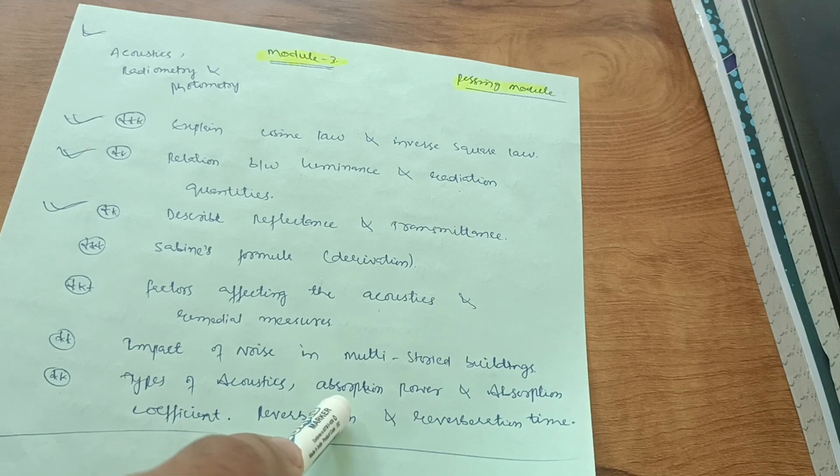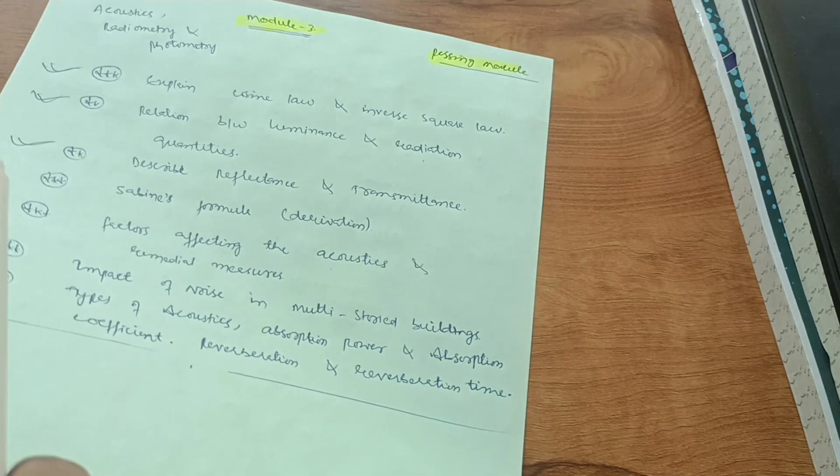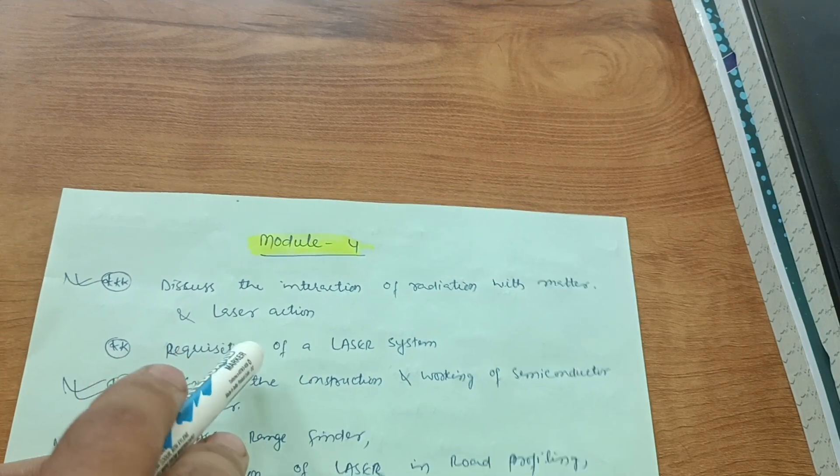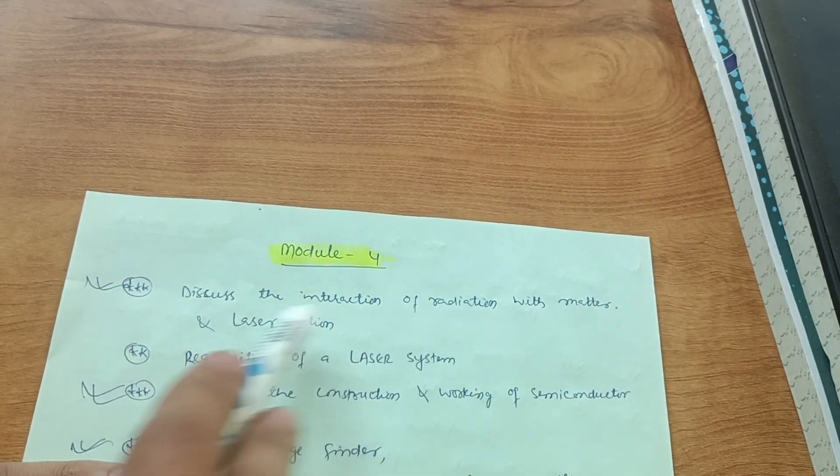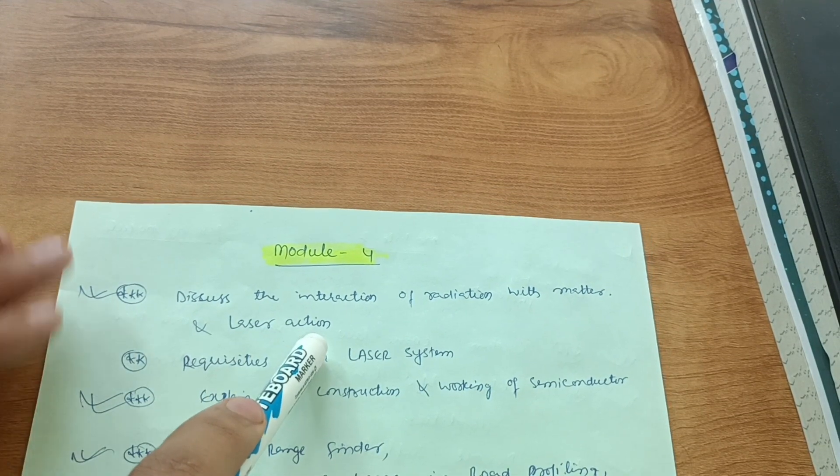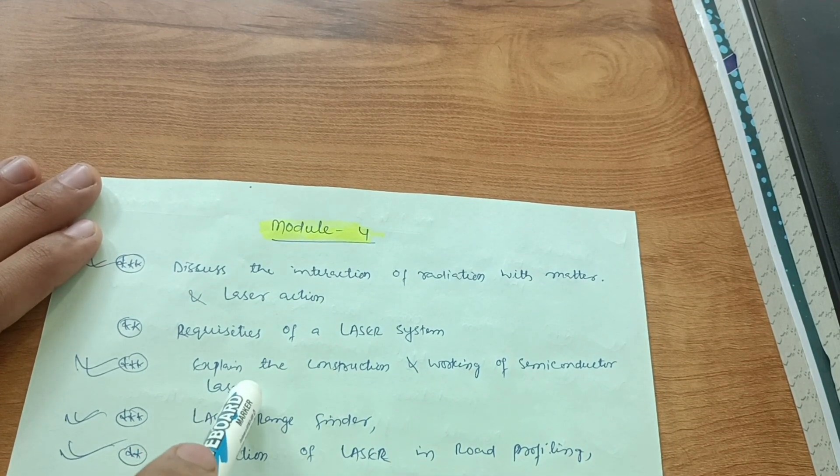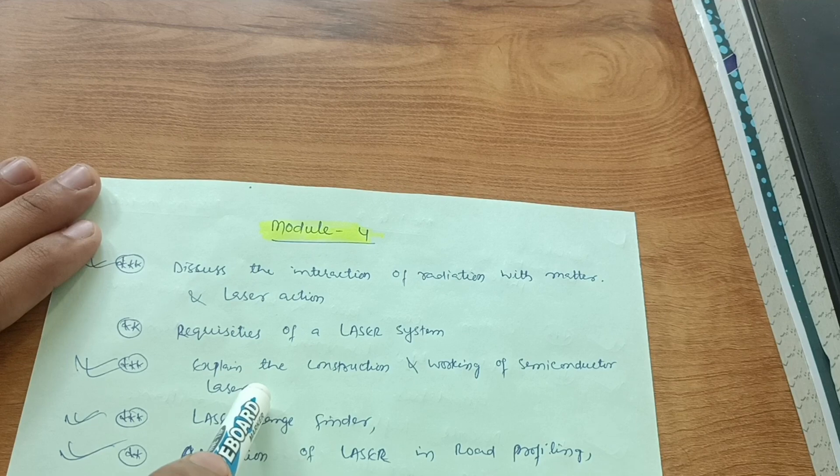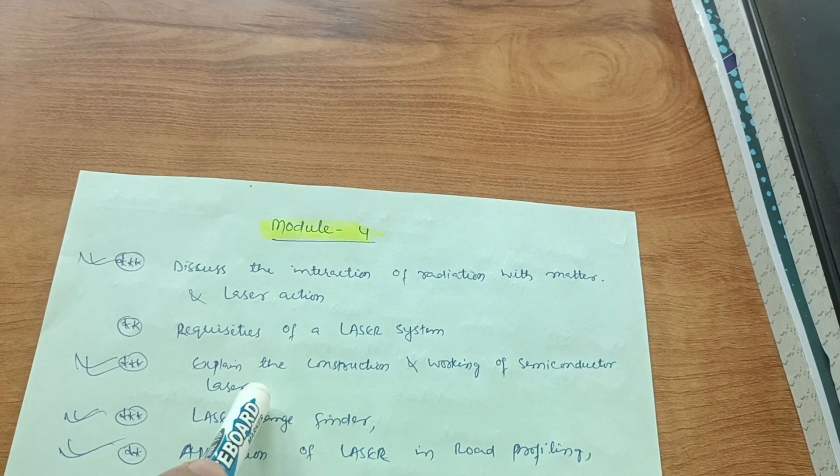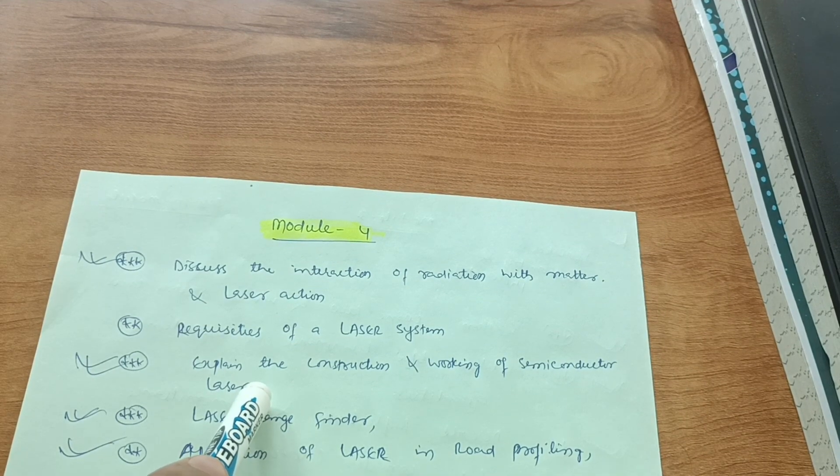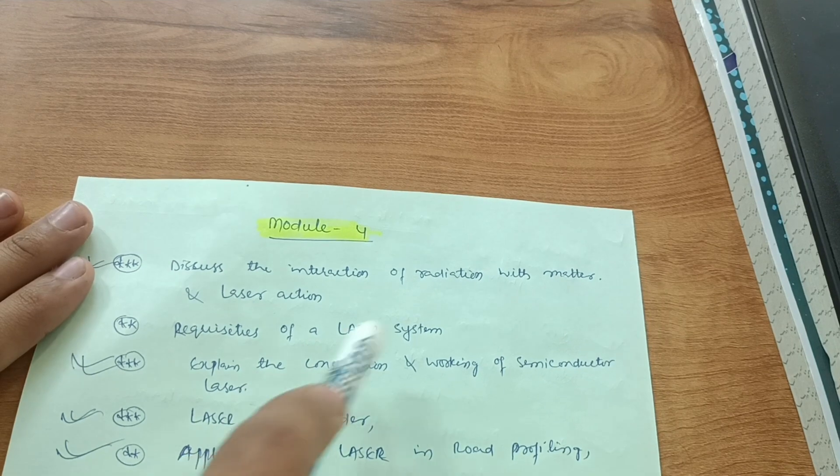Then module four comes up. Discuss the interaction of radiation with matter and laser action. This is the laser part. There is also optical fiber, these are the two chapters in module four. I have taken some most important questions which will definitely come in the VTU examination. First one is interaction of radiation with matter.